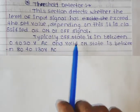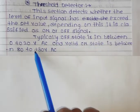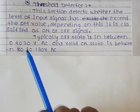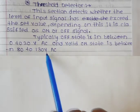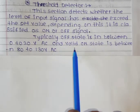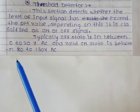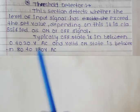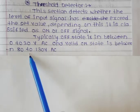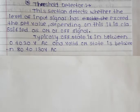Typically the off state range is 0 to 20 volts AC, and the valid on state range is 80 to 130 volts AC.